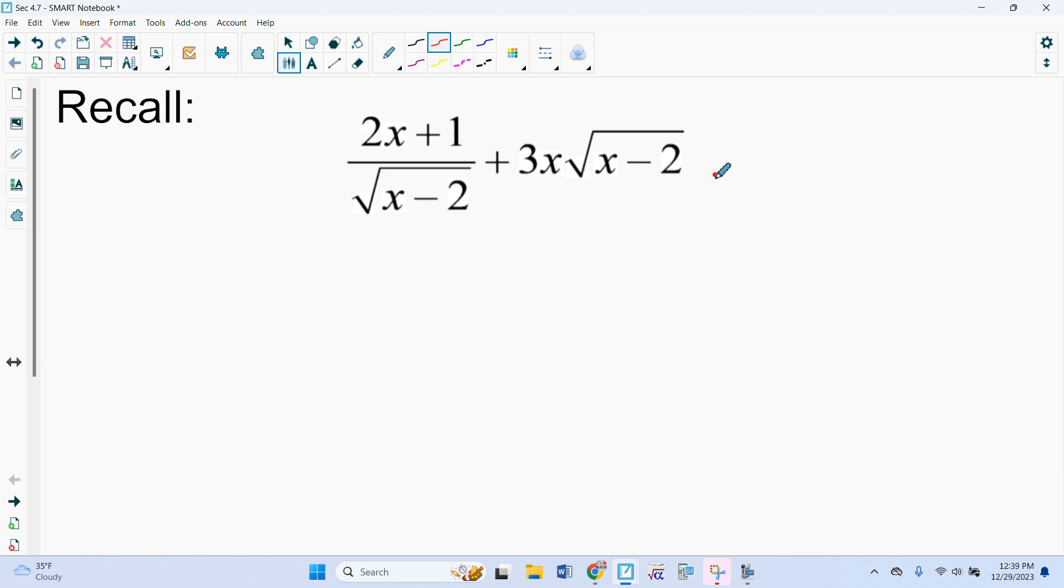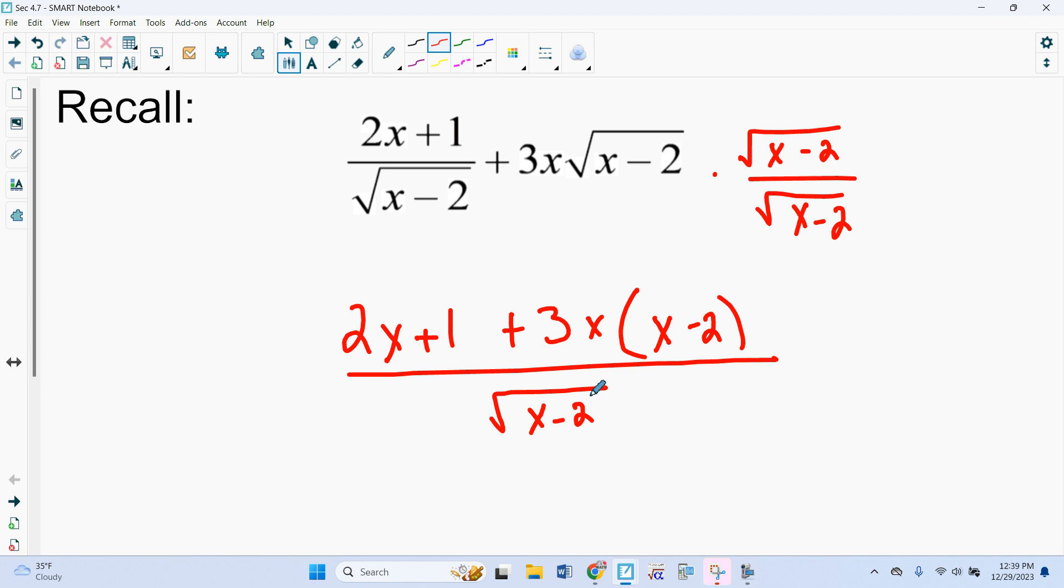we can simplify this by multiplying by the radical on the top and the bottom over here to get common denominators. And then what that will do is we will have 2x plus 1 plus 3x. And then the square root of x minus 2 times the square root of x minus 2 is just x minus 2. And then our denominator is just the square root of x minus 2. So we get this when we end up doing a product rule or quotient rule or something for a function.